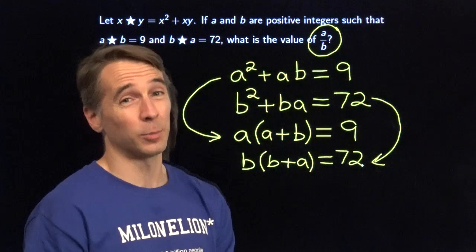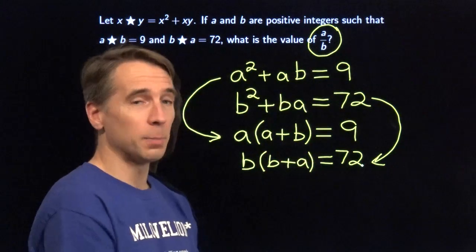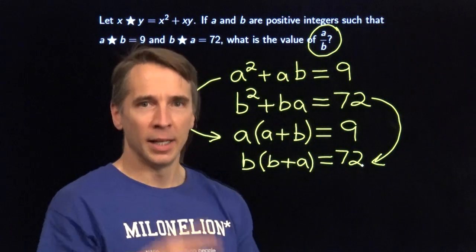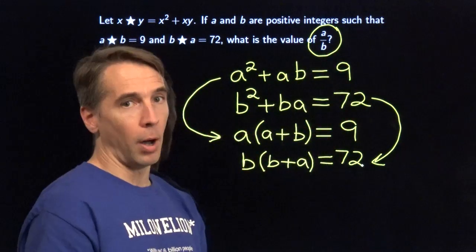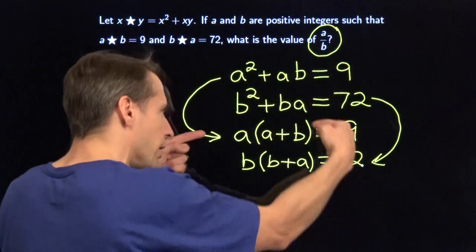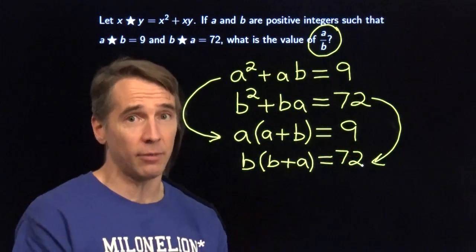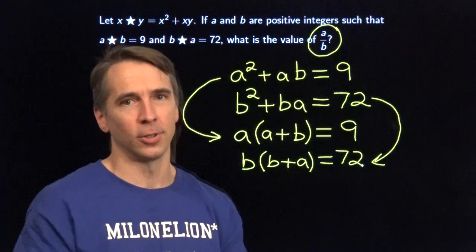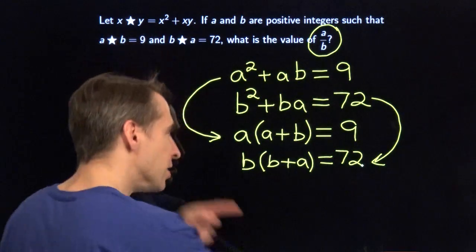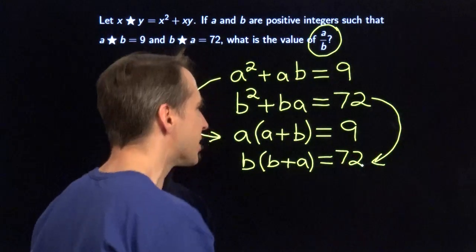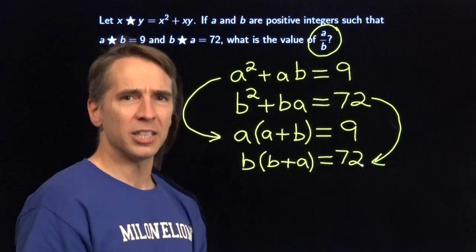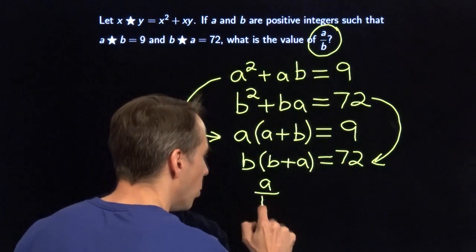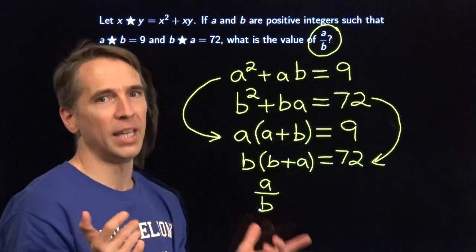Now we see something really nice: a plus b and b plus a — they're the same. And we're keeping our eye on the ball: a over b. We want to divide this equation by this one, because that'll give us a over b since these two cancel. That's really slick. So we divide this equation by this one — divide the left side by this left side — these two cancel, and we are left with a over b.